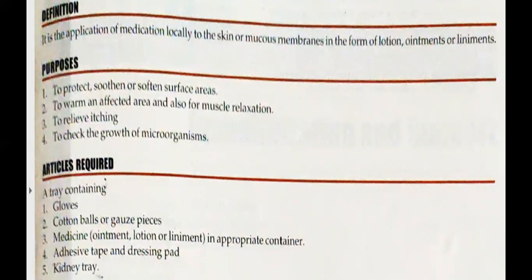We need gloves — clean gloves — to clean that particular area. Then medicine: it may be ointment, lotion, or the appropriate element. Then adhesive tape and dressing pad — if dressing is required, we have to change the dressing, so we will need adhesive tape and a dressing pad. Then we also need a kidney tray for liquid waste. These are all the articles required for this procedure.